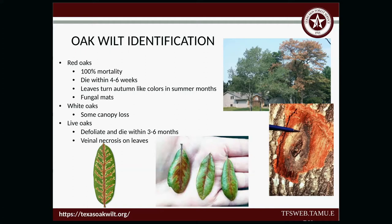Q: If the fungus goes away when the tree dies, does it have to feed on something living? For red oaks, the fungus can still live in the tree depending on the time of year that the oak wilt killed the tree. If your tree died right now from oak wilt, it probably will not create fungal mats the next spring. But if your tree dies later this fall from oak wilt, then it can produce those fungal mats in the spring. It's not an exact science — there are a lot of factors. The fungal mat is visible in the bottom right picture — that's what you would see.